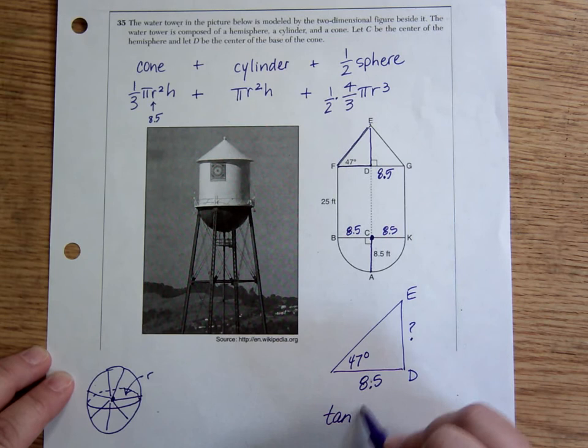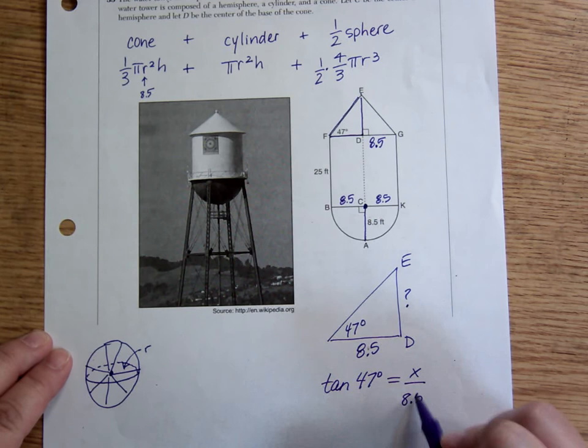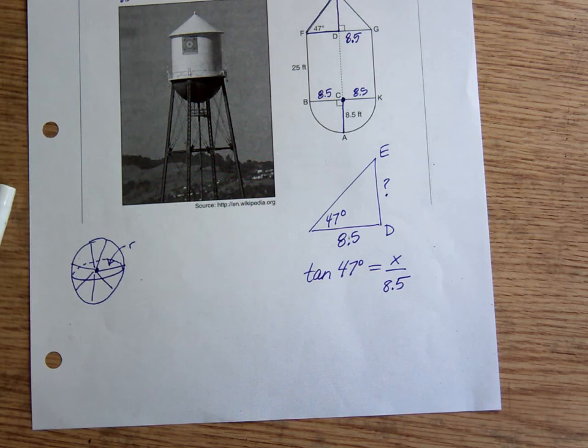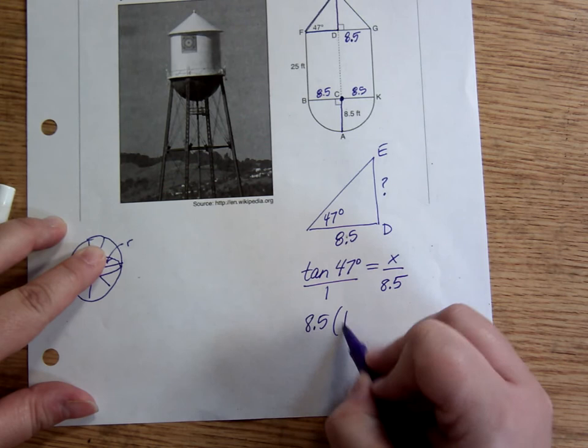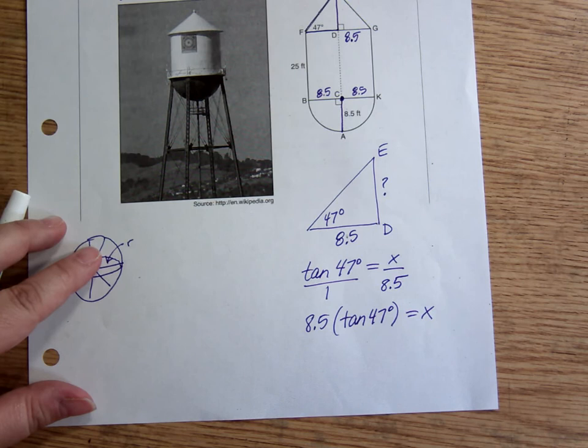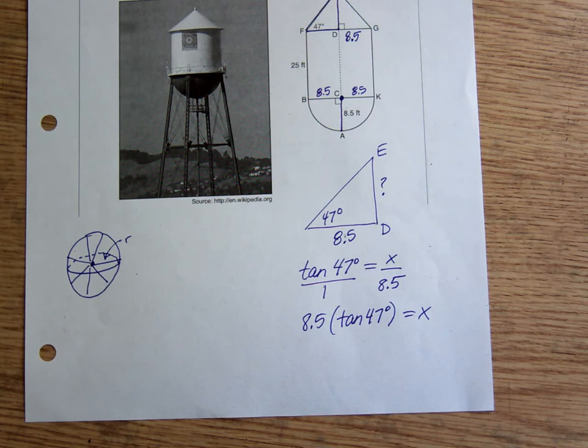Tan of 47 degrees equals the side we need over the side we know. So once I've set that up, I can cross multiply to solve. This is like a proportion where this is over 1. 8.5 times tan of 47 equals X. Remember, at this point, after you cross multiply, you always ask yourself, is my X alone? If it is, great, you know what to put in the calculator. If it's not, you would keep going until it was. In this case it is.